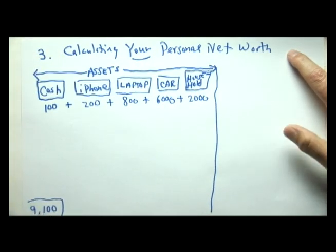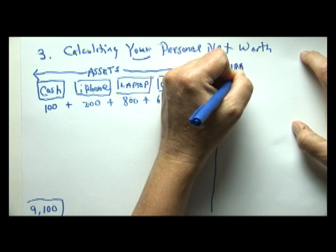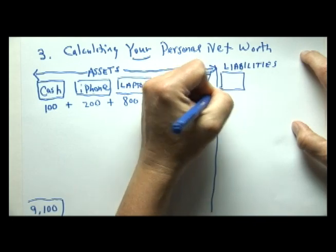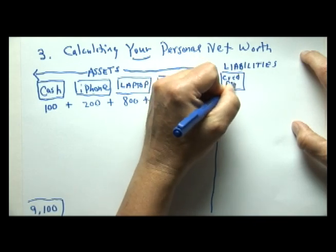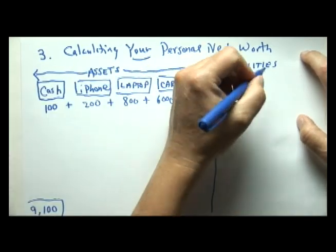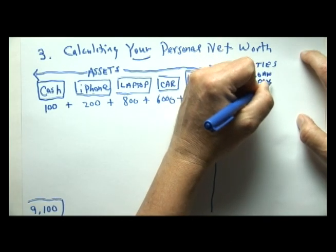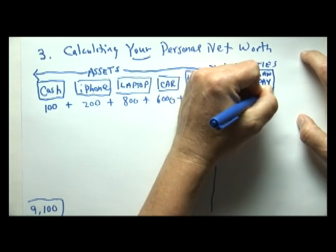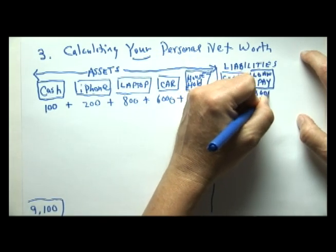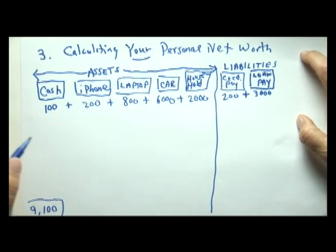Anything owed is called a liability. Using the fundamental accounting equation, let's say this student has two debts: a credit card debt — MasterCard — of $200, and a student loan payable of $3,000. Almost any liability ends with the word 'payable.' Total liabilities come to $3,200.